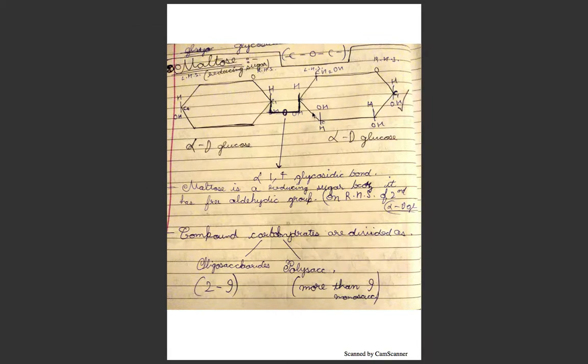The two glucose units that combine to form maltose are structured such that the fourth carbon of the right-hand side glucose combines with the first carbon of the left-hand side alpha-D-glucose to form the alpha-1,4 glycosidic bond. Both are alpha glucoses. The OH groups on each combine, liberating H2O, and only the oxygen bridge remains.